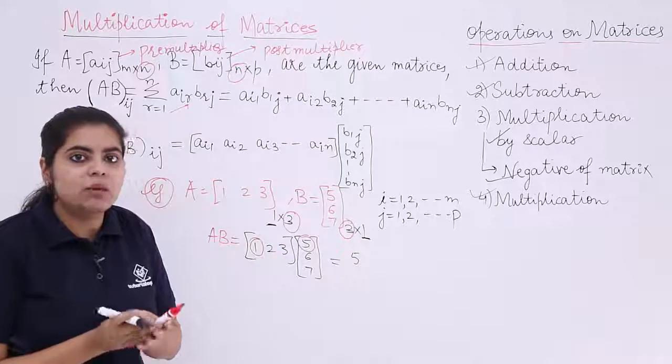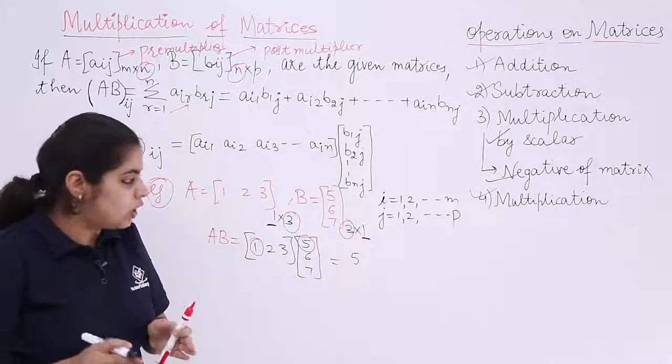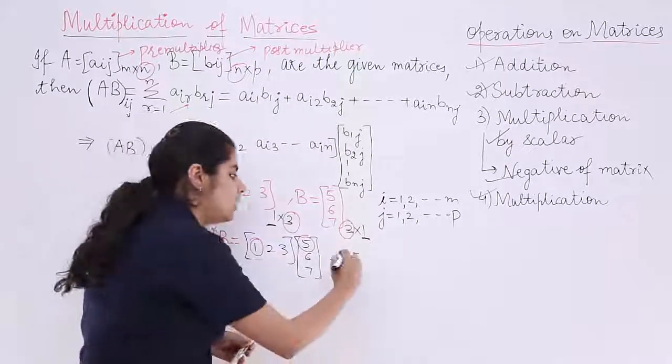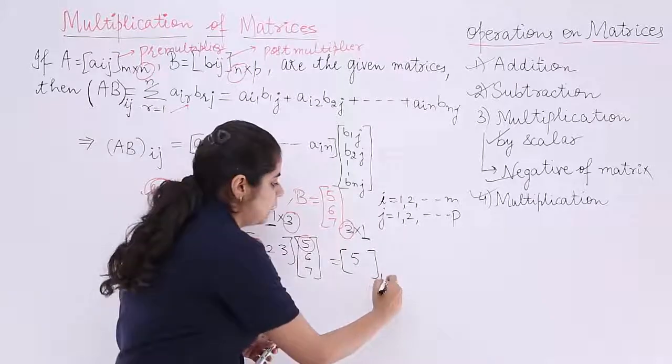So that means I have basically 1 by 1 matrix. 1 row, 1 column. So 1 row, 1 column means a single square. You can draw it. So it is 1 by 1.